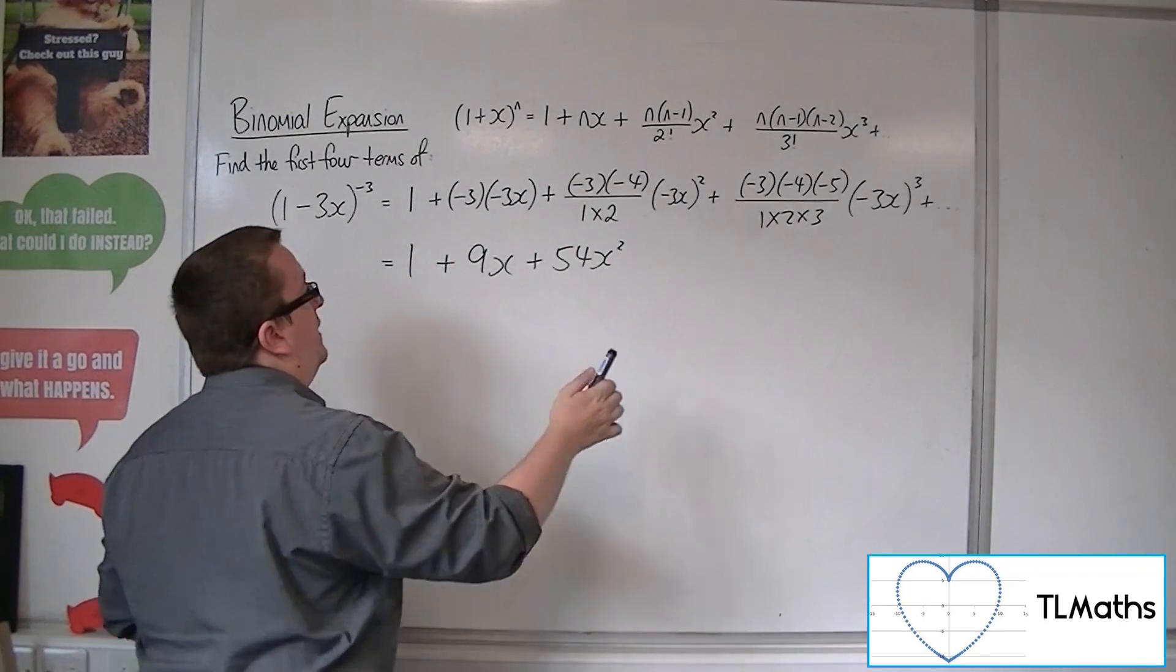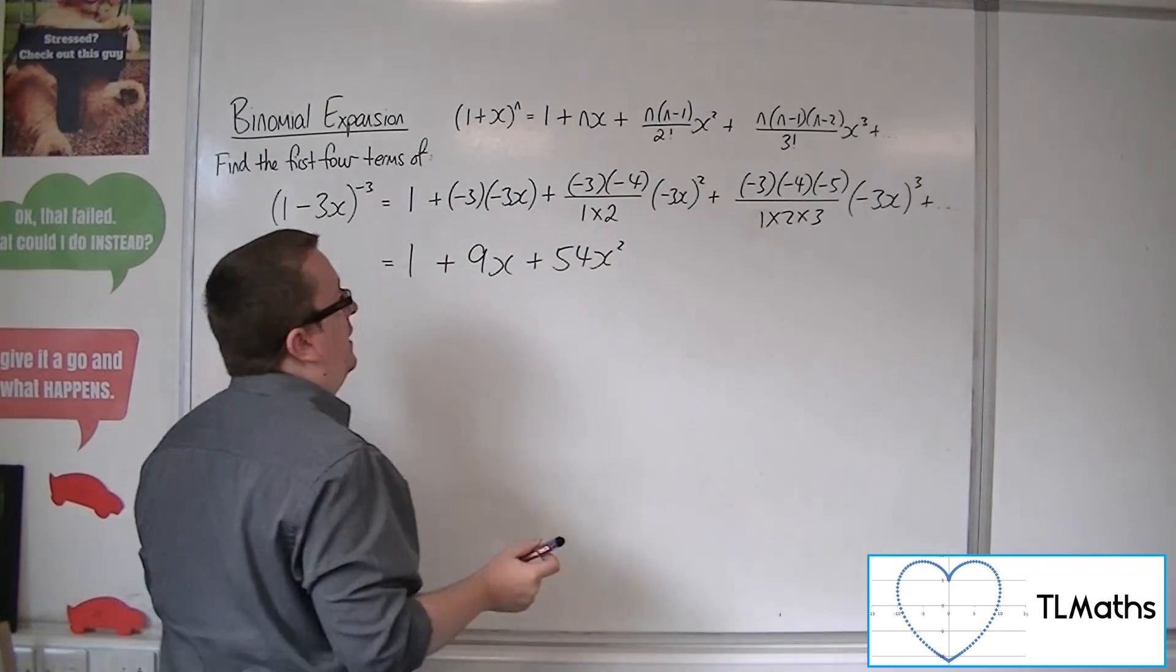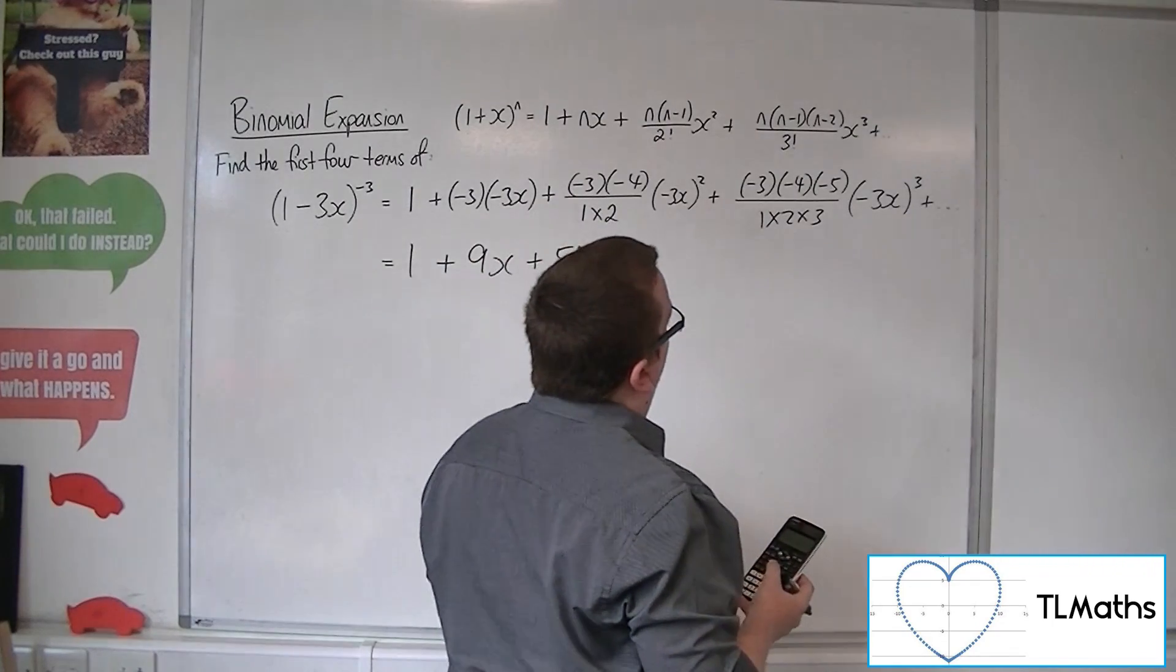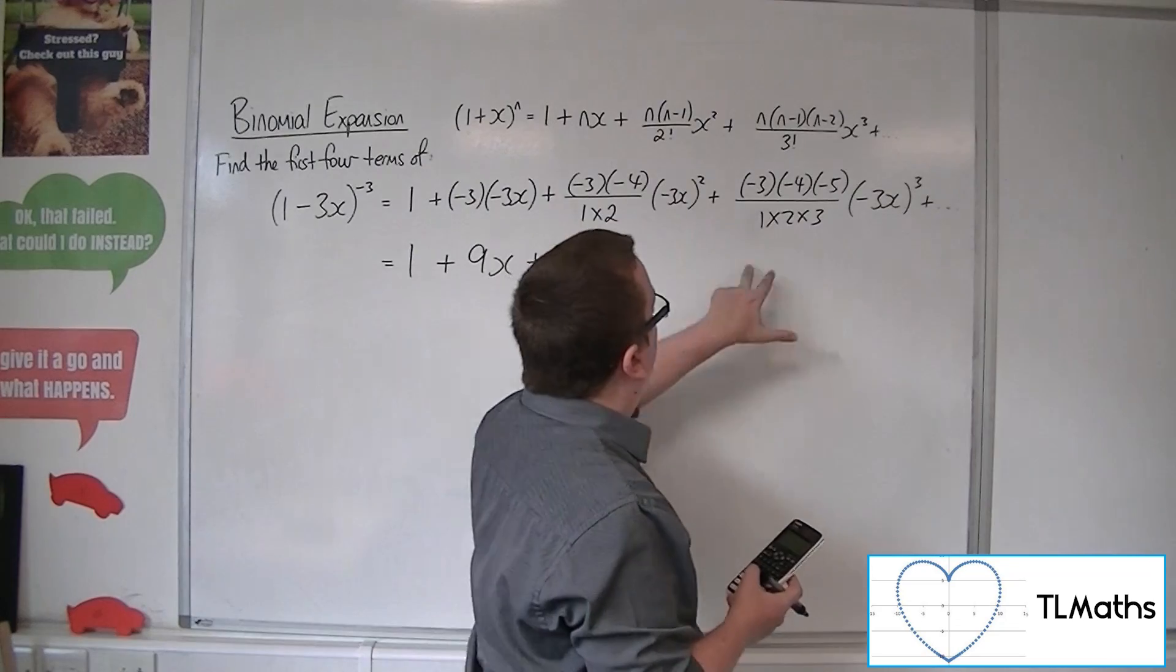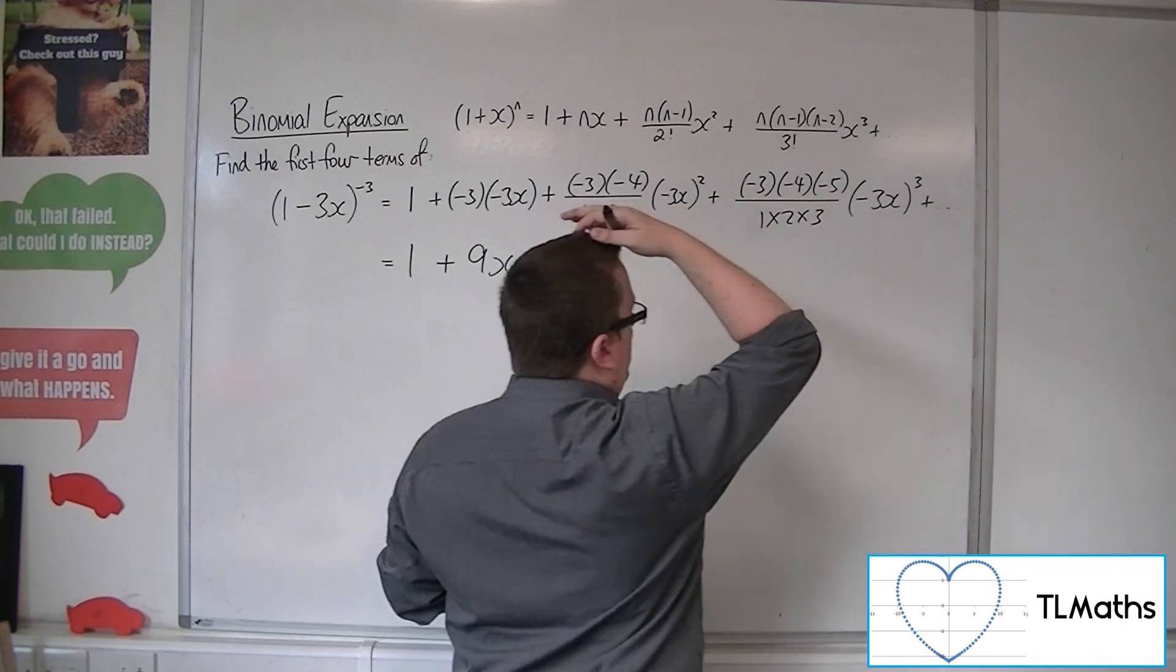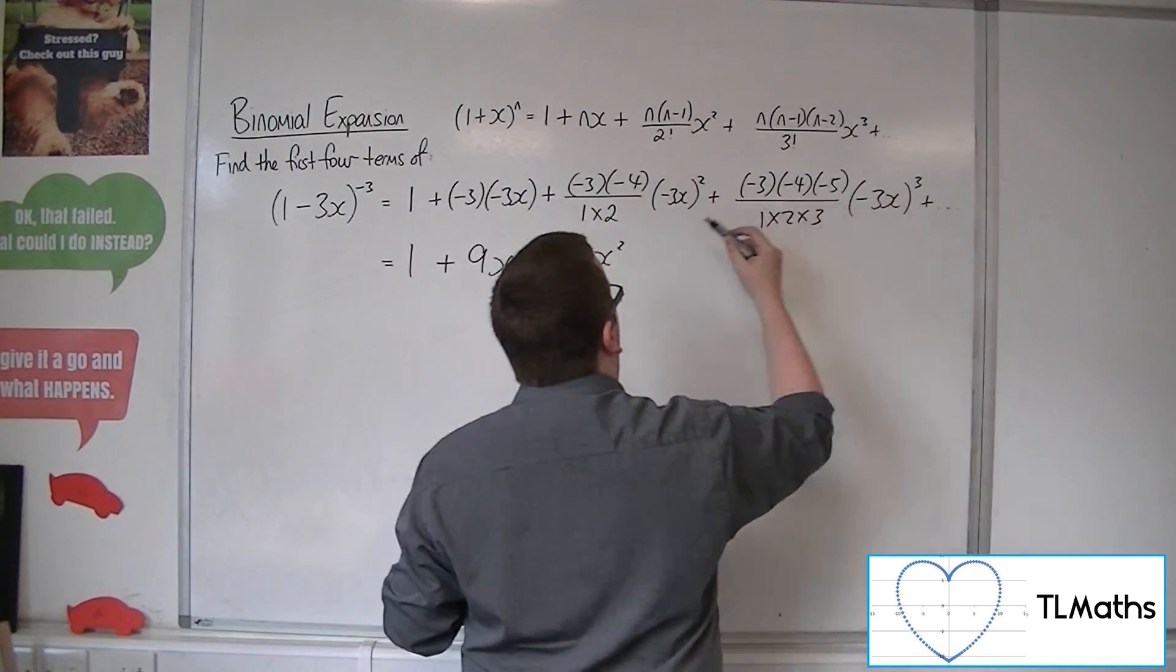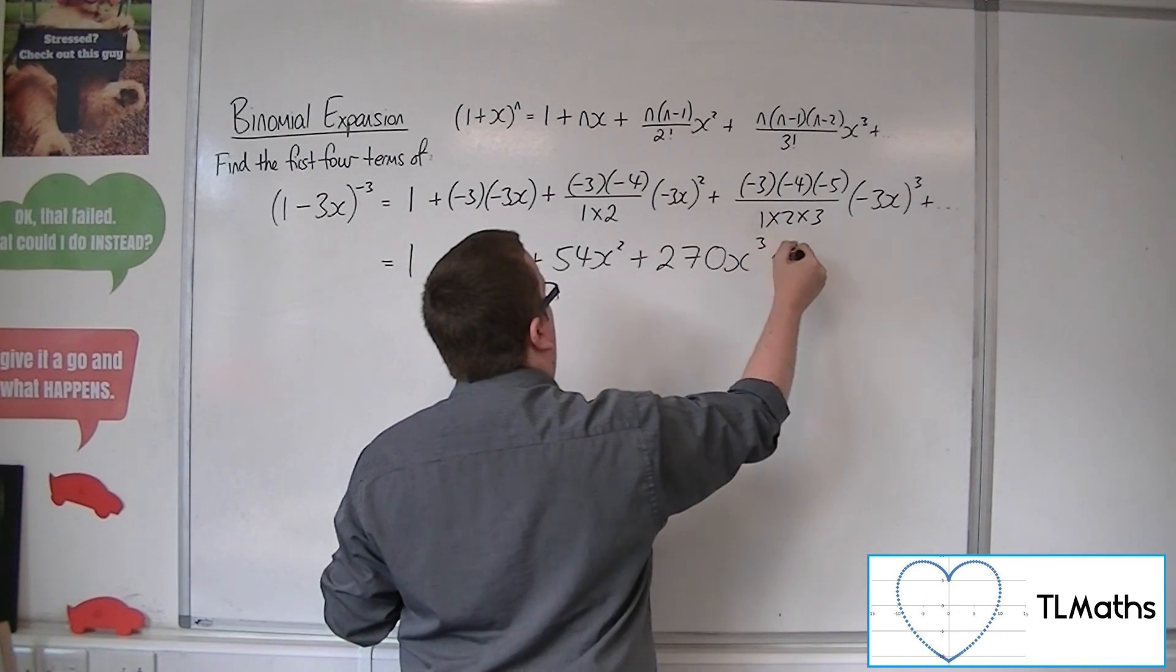Keep an eye on the minus signs here. The minus sign got cancelled out there. We've got the minus sign getting cancelled out there. Then we have minus 3 times minus 4 times minus 5. So 3 times 4 times 5 is 60, divided by 6 is 10. Over here we've got minus 3 cubed, which is minus 27. So minus 10 times minus 27 is plus 270x cubed.